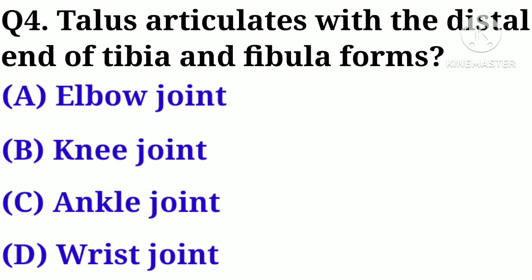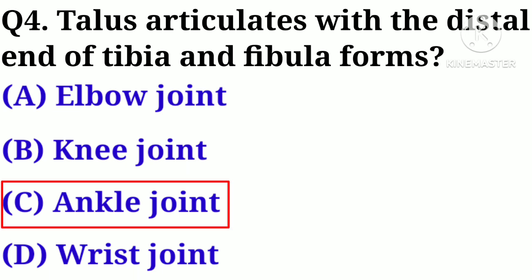Q4. Talus articulates with the distal end of tibia and fibula, forming the: A. Elbow joint, B. Knee joint, C. Ankle joint, D. Wrist joint. Answer: C. Ankle joint.